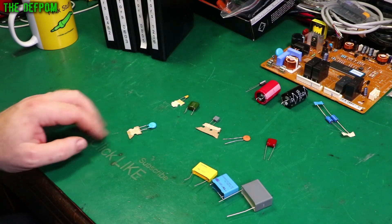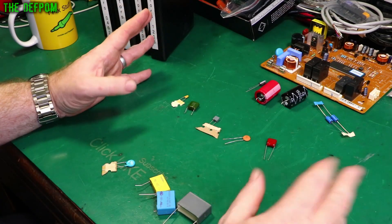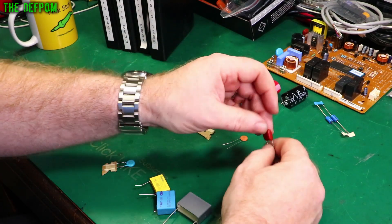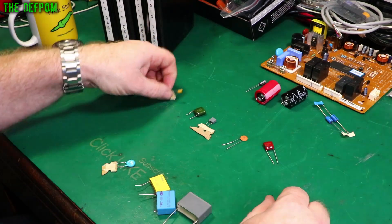So these are just different X class caps. Over here we've got some other general types. We've got some green caps here, it's a plastic film cap. We've got a ceramic here. We've got another plastic cap. Dipped cap here. Here's a tantalum.